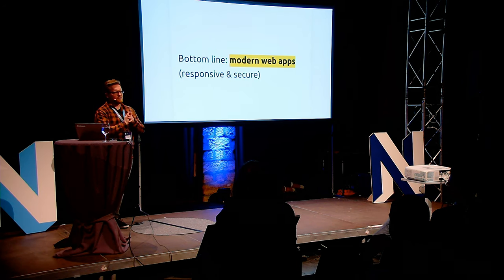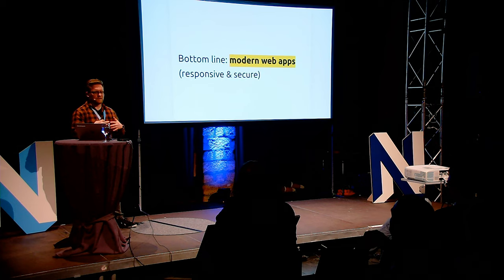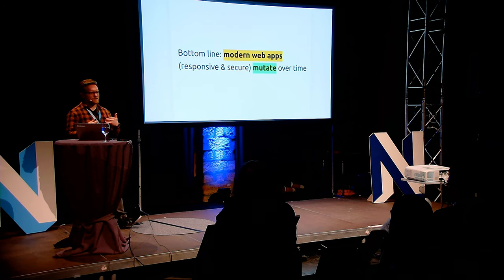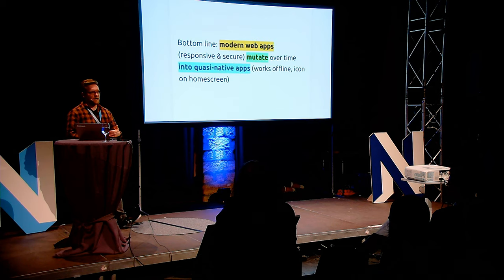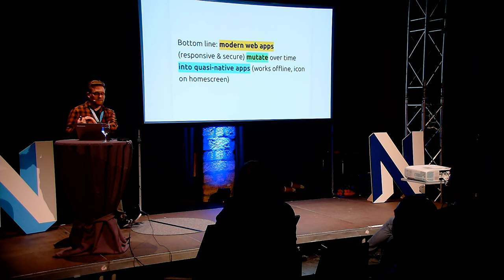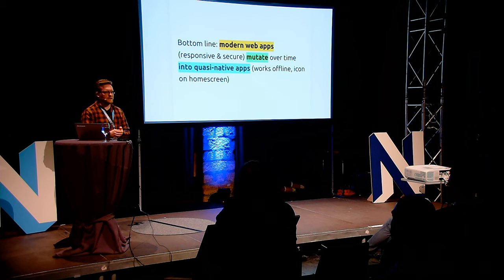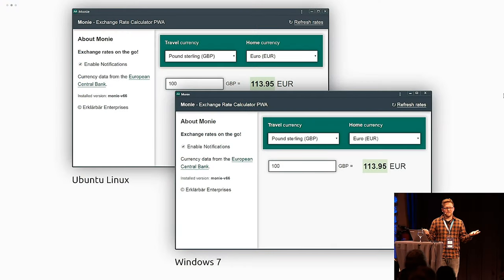This is what a progressive web app usually is: just a reasonable modern web app that's secure, responsive, and has been augmented using some modern web standards to mutate over time from a plain web page into a quasi-native app that works offline, has a starting icon, and is basically indistinguishable from a native app. This works with basically every operating system — Chrome on Android, Linux, Windows. It's just a responsive web page, but it works, functions, and feels like a native app.